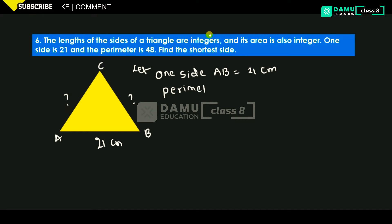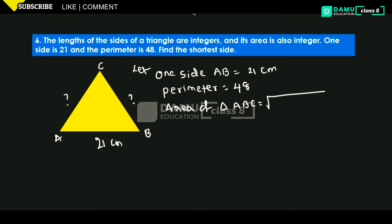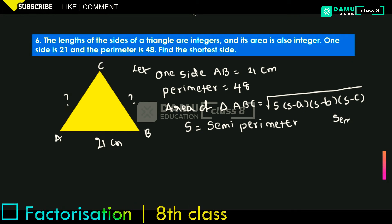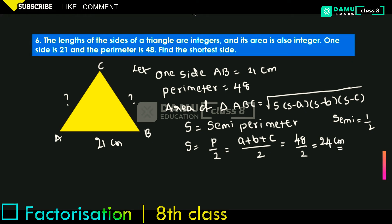The perimeter is given as 48. We should know Heron's formula: the area of triangle ABC equals the square root of s times (s minus a) times (s minus b) times (s minus c). Here s is the semi-perimeter, which means half the perimeter. So s equals perimeter divided by 2, which is 48 divided by 2, giving s equal to 24.